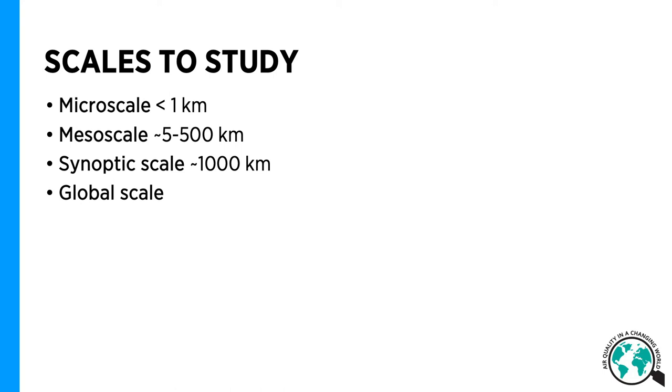We also can have some small single convective clouds that are in the microscale. We can study the atmosphere in the mesoscale, from 5 to 500 kilometers approximately. In this scale we have organized convection, so-called mesoscale convective systems or squall lines. We have the land-sea breeze and katabatic winds.